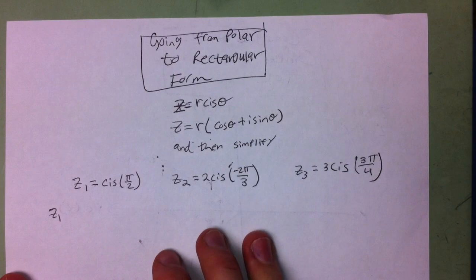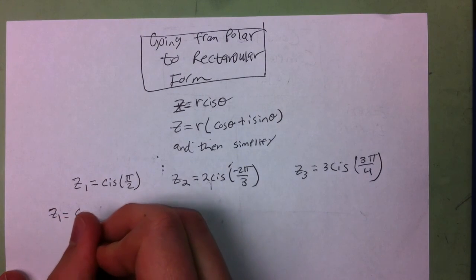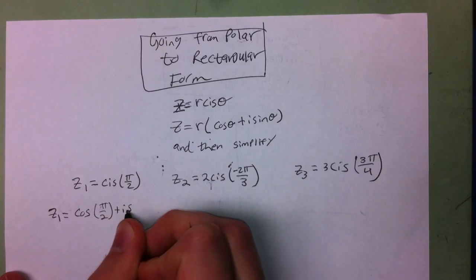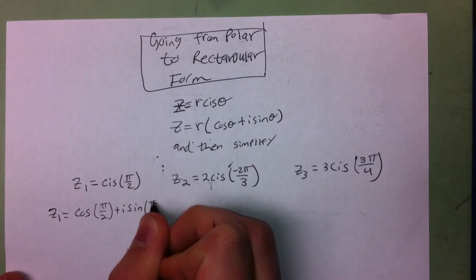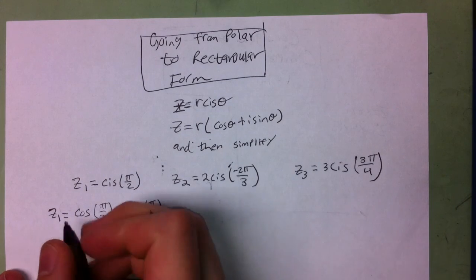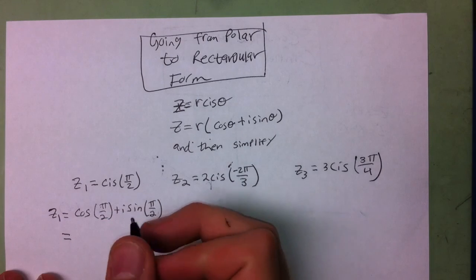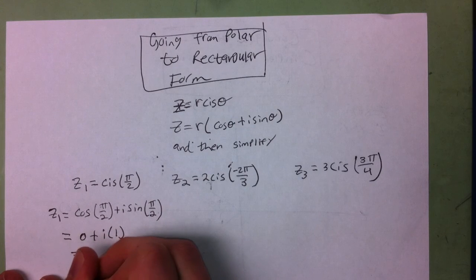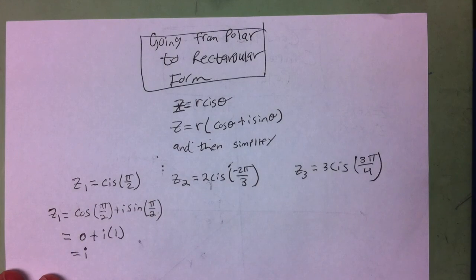z₁ equals cos(π/2) plus i*sin(π/2). Then we simplify from there. Cosine of π/2 is 0, and sine of π/2 is 1. So in rectangular form, z₁ equals i.